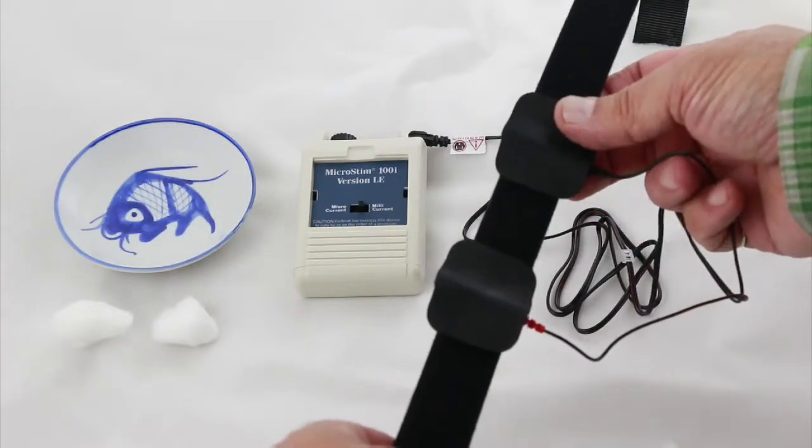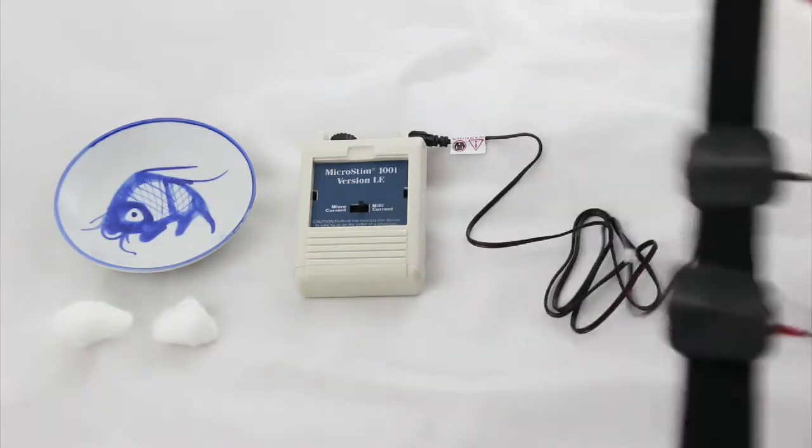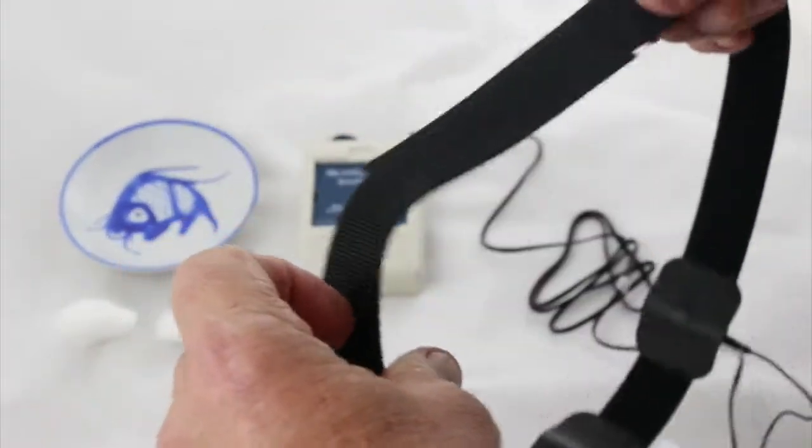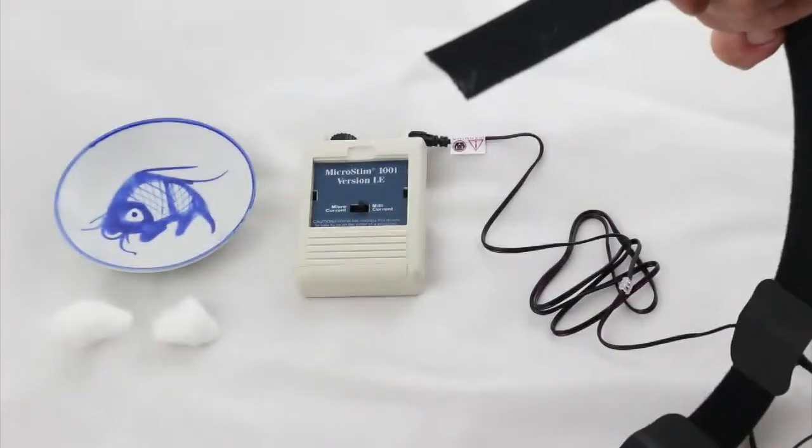Then you could wrap this around your head if you were treating your eyes, or around your knee as an example. The Velcro strap will hold them in place. You can get a bigger strap if you need.